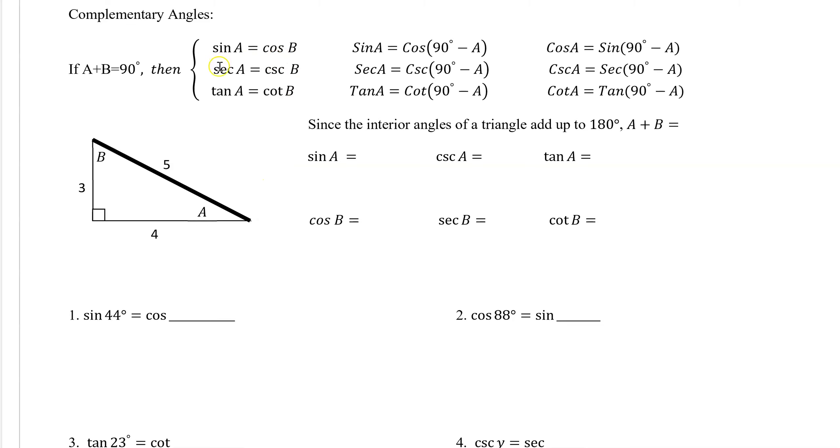That's because cosine and sine are both equal to each other when their angles add up to 90, so when they are complementary angles. Same with secant and cosecant and tangent and cotangent.